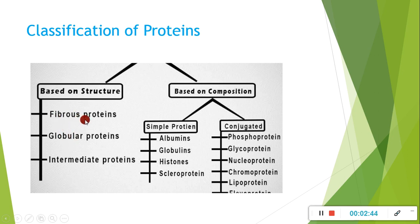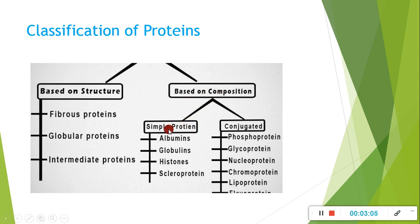Basically, all proteins consist of different types of amino acids. Amino acids are the building blocks of proteins. The second classification is on the basis of composition. The first type is simple proteins and the second is conjugated proteins.